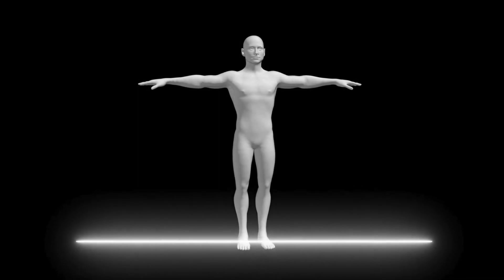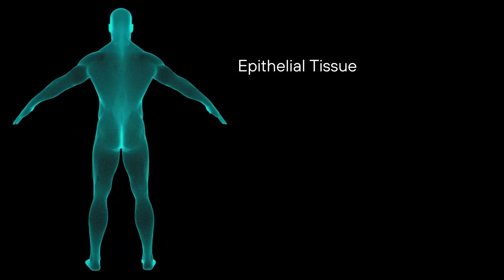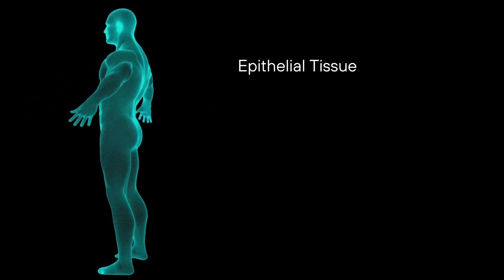In the human body, there are four basic types of tissues. Epithelial tissue, which forms the protective layer that covers both our internal and external surfaces.